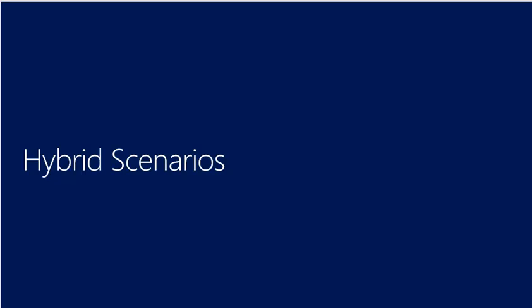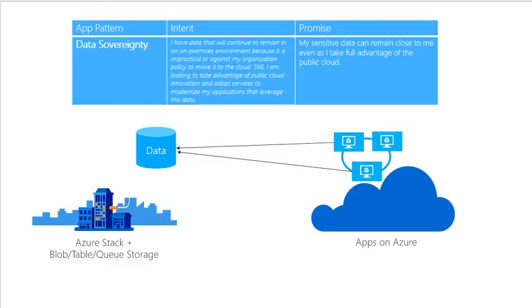For today we will be talking about the hybrid scenarios — what that means for us and how we can implement it. Let's start with the app pattern. Azure Stack, along with Blob, Table, and Queue Storage, will allow us to use apps in Azure. If you have data that will continue to remain on-premise, you can still consume external tools from Microsoft to do analytics and benefit from them.